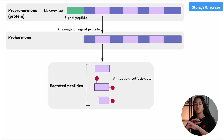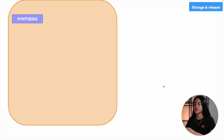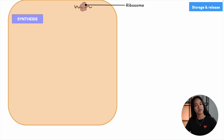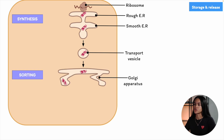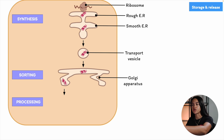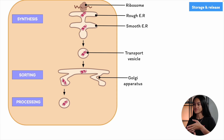Peptides are synthesized by ribosomes, which consist of a large subunit and a small subunit. The peptides go through the rough endoplasmic reticular membrane, after which they are transported in vesicles to the Golgi apparatus. From here, they are sorted and packaged into secretory vesicles where some processing occurs, such as cleavage, amidation, or sulfation. Peptides are stored in these vesicles and released by exocytosis when needed.